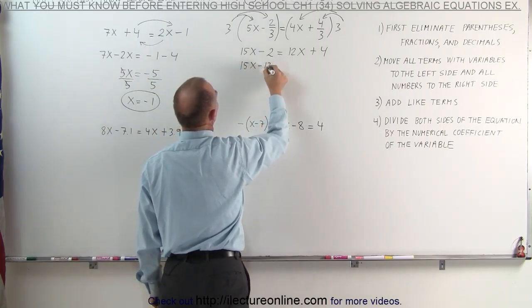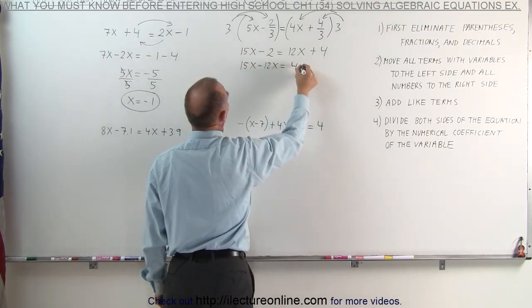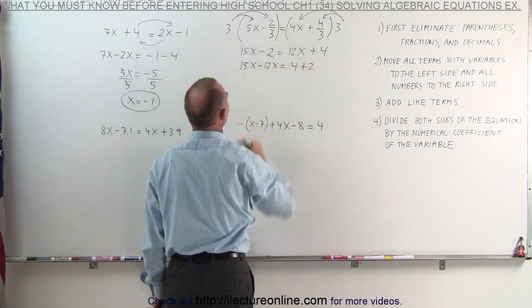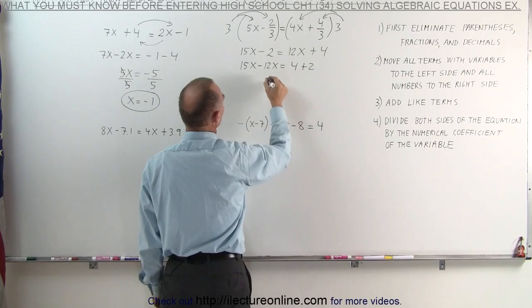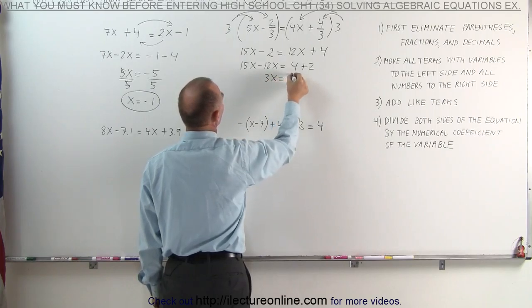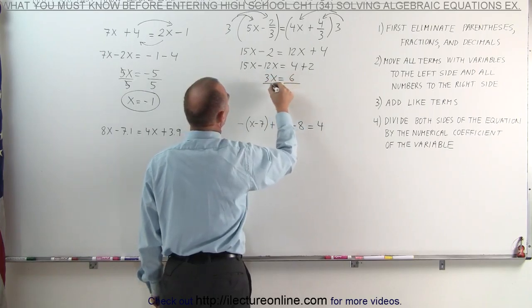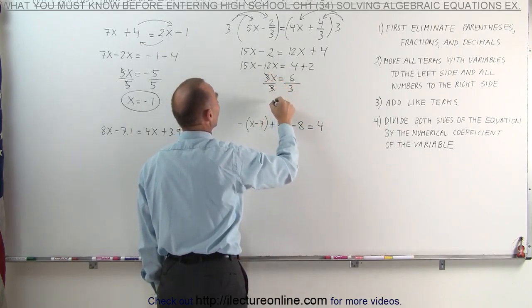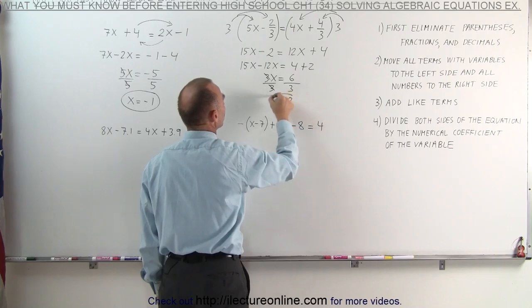15x minus 12x is equal to 4 plus 2. Notice the minus 2 becomes a plus 2. The 12x becomes a minus 12x. Combining like terms, 3x is equal to 6, and dividing both sides of the equation by the numerical coefficient, the number in front of x, we get x equals 2.